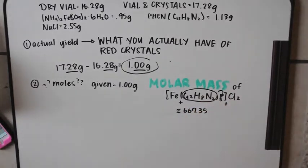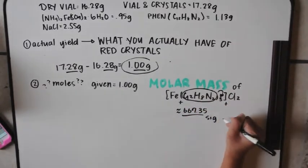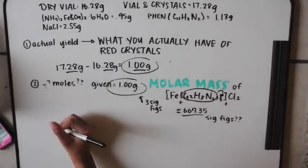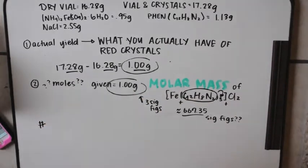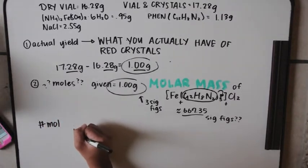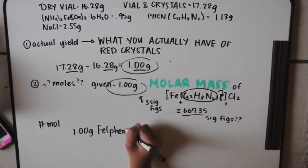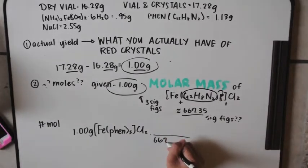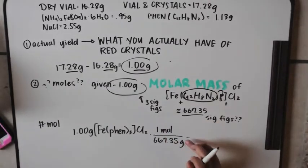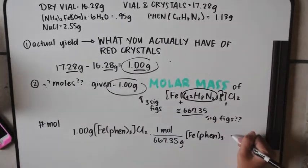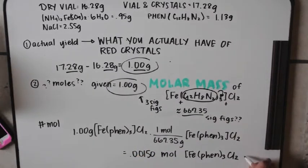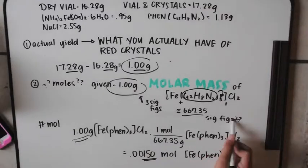You should get approximately 667.35 grams per mole, which is five sig figs. Since you're given three sig figs, you don't need to worry about sig figs from your molar mass — as long as it has more than you're given, you'll end up with three sig figs. You would have 0.00150 moles of iron tris-phen chloride salt.